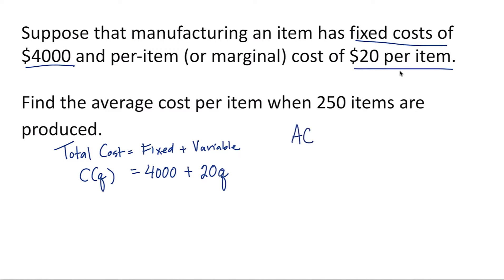Now we can find our average cost by taking our total cost function and dividing it by the number of items produced. In this case, we'll take $4,000 plus 20Q and divide that by Q. That is our average cost function.